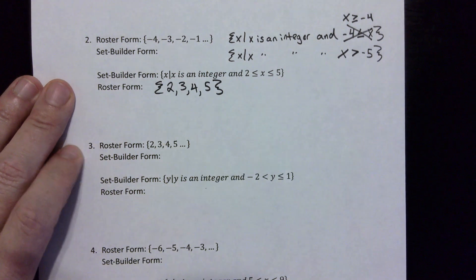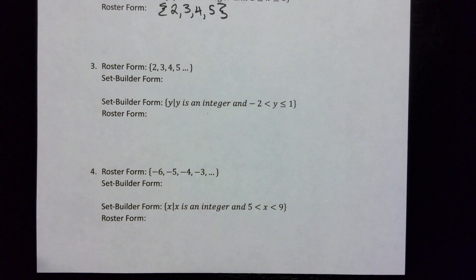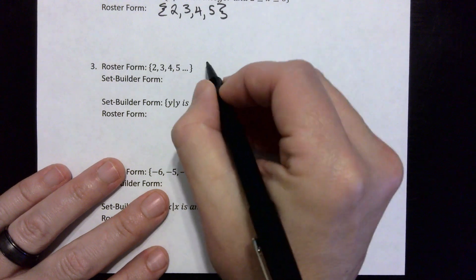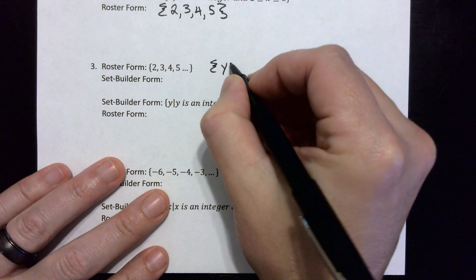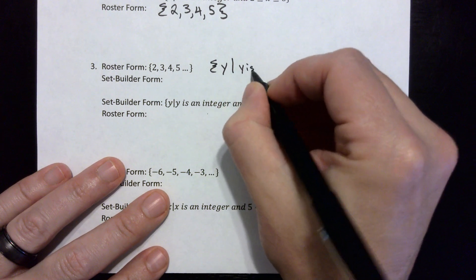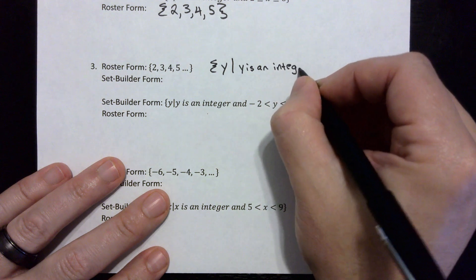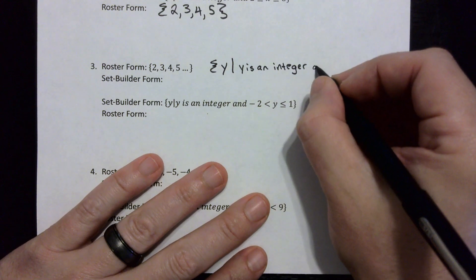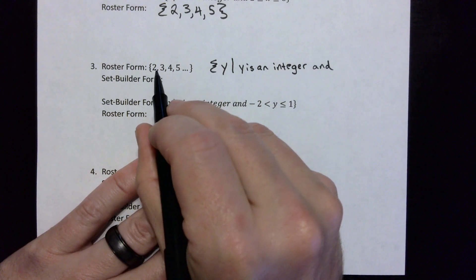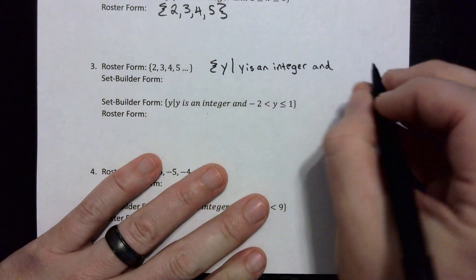The third problem has roster form two, three, four, five, dot dot dot, meaning the pattern keeps going. We can write this in two ways. Using y, the first way is: y such that y is an integer and y is greater than or equal to two. It starts at two and just keeps getting bigger.